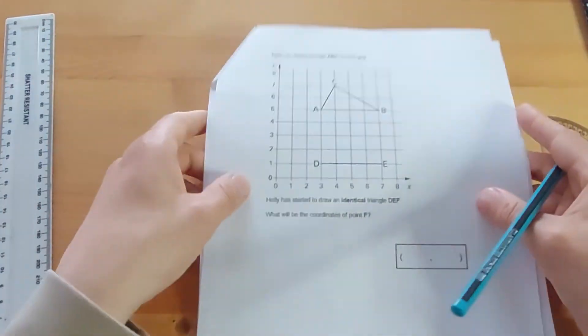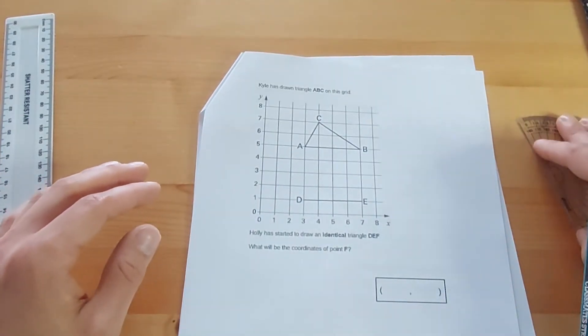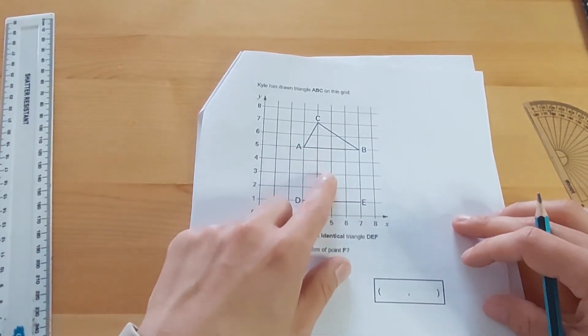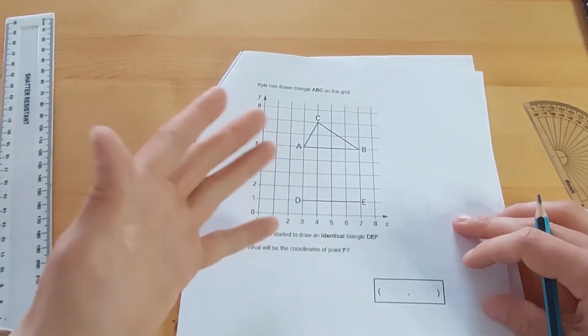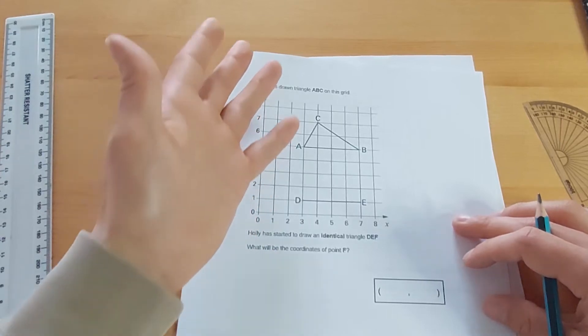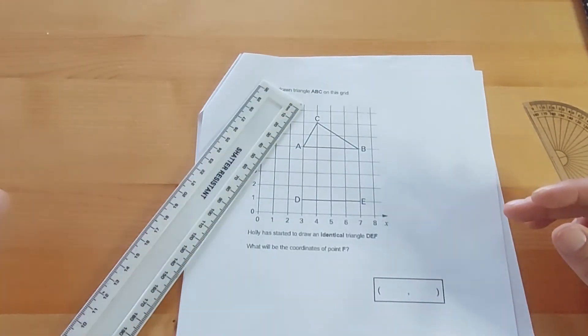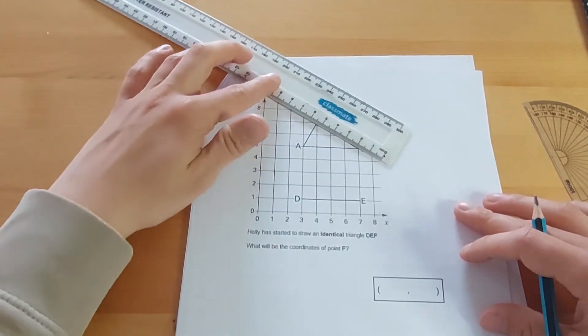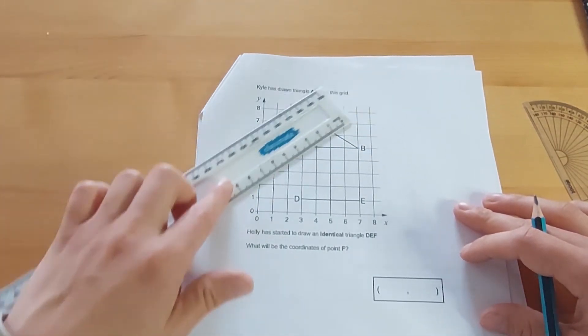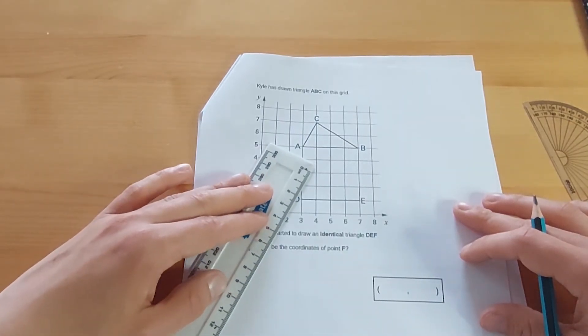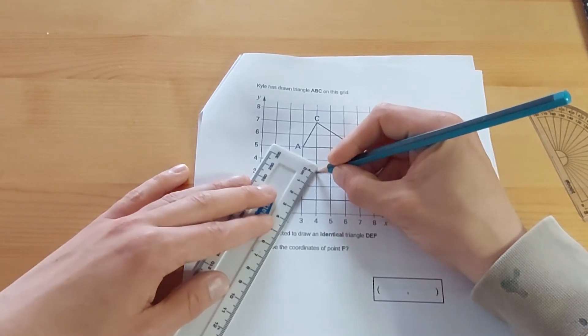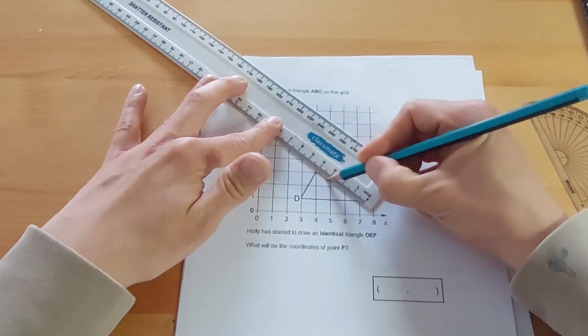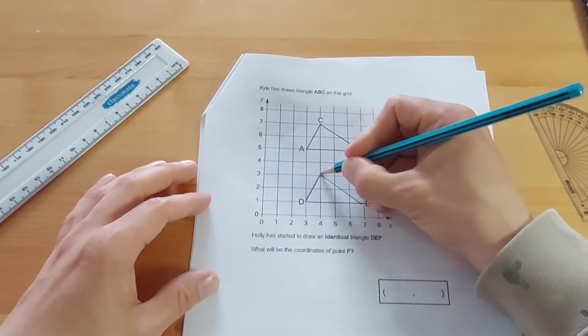Final question on coordinates. Kyle has drawn triangle ABC on his grid. Holly has started to draw an identical triangle DEF, missing F. What will the coordinate of point F be? Once again, we need to know a little bit about 2D shapes, triangles in this case. Let's measure the distance between each of these points. Between C and A, there are two centimetres. And between C and B, there are four centimetres. So I'm going to go from D two centimetres up to here, and I'm going to go from there down to E, and it should be four centimetres. And it is. Once I have done that, I can then see that the missing point was here.